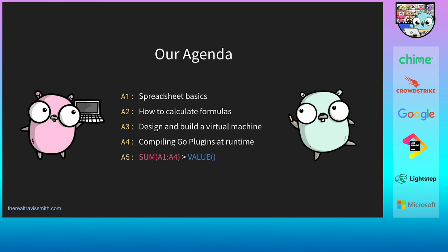I'll start today with the basics of spreadsheets — what they are and how they're used — as well as some terminology we need for this talk. Then we'll look at how to calculate formulas, including lexical analysis, parsing, syntax trees, and post-order traversal. We'll also focus on two ways to increase performance: first, designing and building a virtual machine with an intermediate language and bytecode compilation; and second, converting our code to Go code compiled and loaded using Go plugins. Finally, we'll sum everything up — spreadsheet pun intended — and see if we've created real-world value.